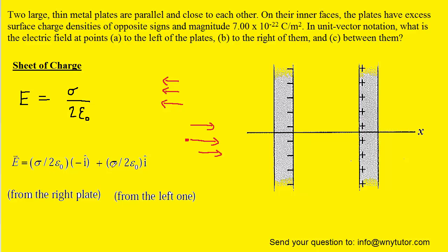So when we sum together the individual electric fields, we have to make sure when using our unit vector notation that we assign a negative sign for the electric field produced by the right plate. Because that's pointing away from that positive plate or to the left in this drawing. And then we can use a positive unit vector for the electric field pointing towards the negative plate.